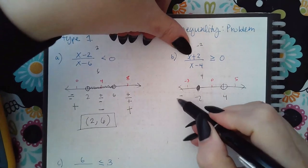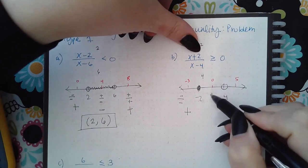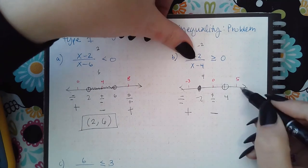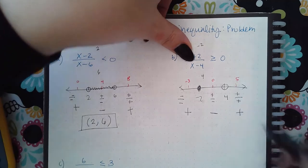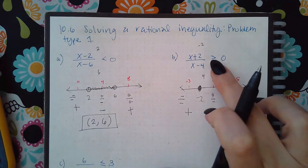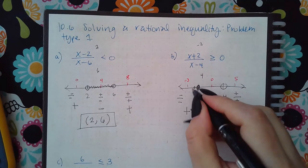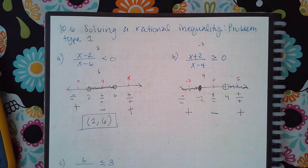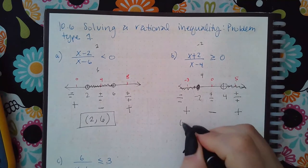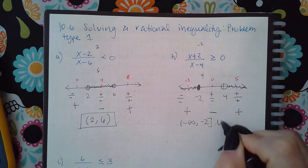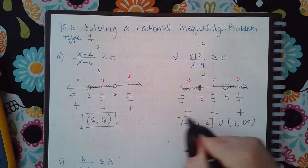At negative three I get a negative over a negative, which is positive. At zero I get a positive over a negative, which is negative. At five I get a positive over a positive, which is positive. Since I'm looking for values greater than or equal to zero, I include both positive regions. The answer is negative infinity to negative two with a bracket, union parenthesis four to infinity.